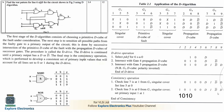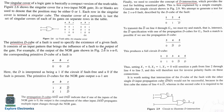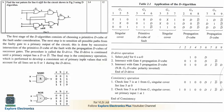This becomes the test pattern to detect stuck-at 0 at line 6. Any small mistake while taking singular cover, primitive D cube, or propagation D cube values will result in a wrong final test pattern, so careful computation is essential. This completes Module 4.